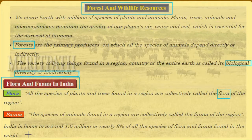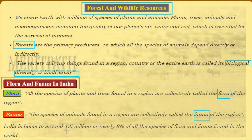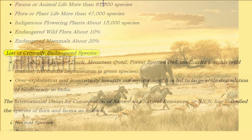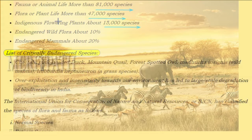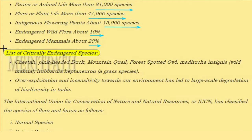The species of animals found in a region are called the fauna of that region. India is home to around 1.6 million species, nearly eight percent of all species on earth. In India we have 81,000 species of animal life or fauna, 47,000 species of plant life or flora, and 15,000 species of indigenous flowering plants. Endangered wild flora constitute about 10 percent and endangered mammals about 20–50 percent.